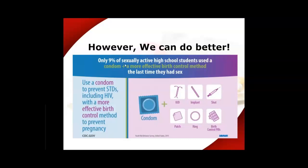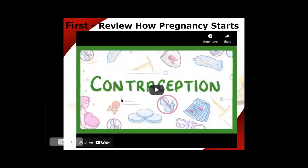Only 9% of sexually active high school students use a condom plus a more effective birth control method the last time they had sex. Using a condom along with another contraceptive method really increases your chance of not transmitting an STI and not creating a pregnancy. Using both methods together is more effective.